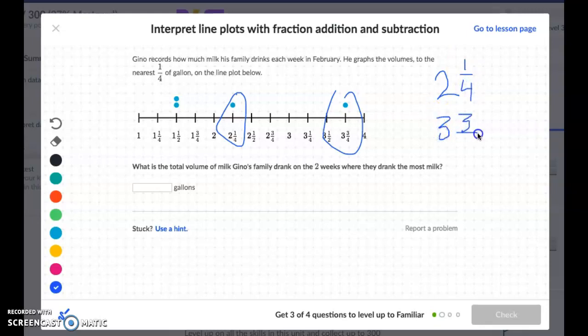So when I do that I get ¼ plus ¾ is 4/4 and 2 plus 3 is 5 and 5 and 4/4. 4/4 is really a whole so I'm going to make that into 1 whole so it's going to be a total of 6 gallons.